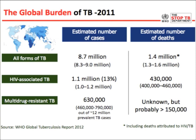First, the burden of tuberculosis. We estimate some 8.7 million new cases of tuberculosis every year, and there are about 1.4 million deaths caused by tuberculosis every year, which makes TB very much the first or second leading cause of infectious disease mortality in the world. The form of tuberculosis associated with HIV accounts for about 1.1 million cases, or over 13% of the 8.7 million estimated cases, causing 430,000 deaths every year.